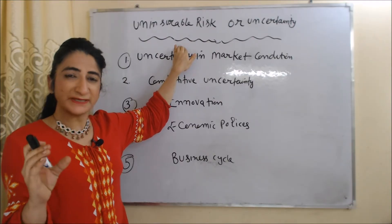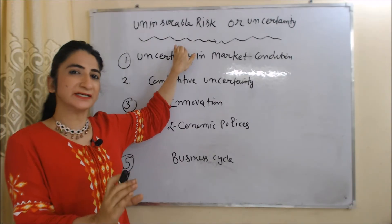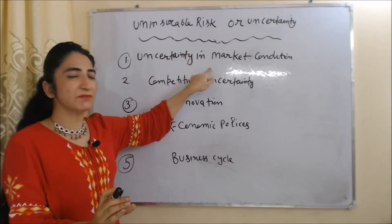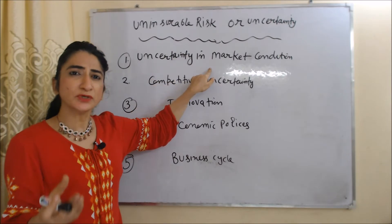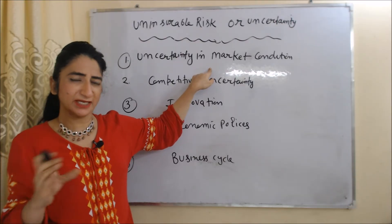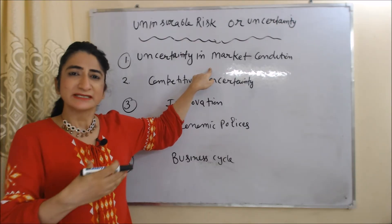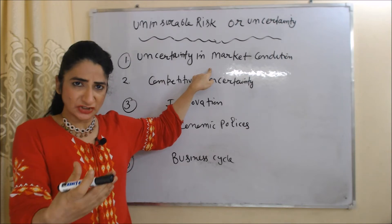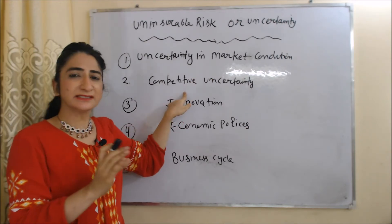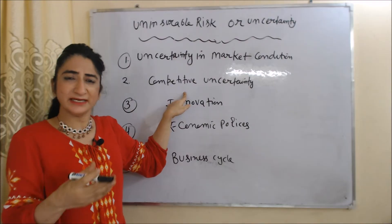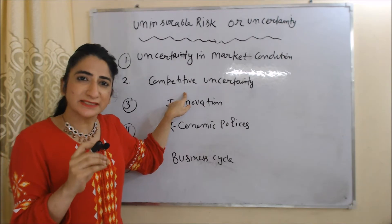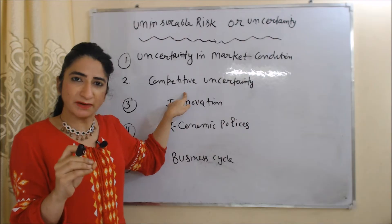Uninsurable risk is basically divided into five parts. The first part includes uncertainty in market conditions. We are not sure about market conditions — there are so many ups and downs, and suddenly demand and supply can change, which leads to uncertainty. Second is competitive uncertainty: any time a new competitor can come in the market and the profit of existing firms becomes uncertain.